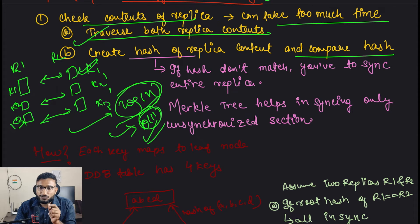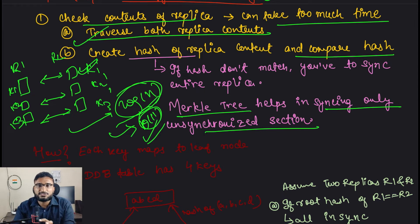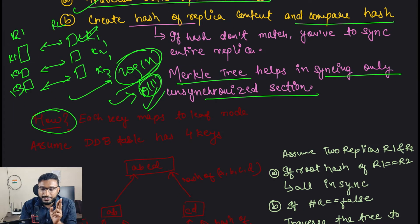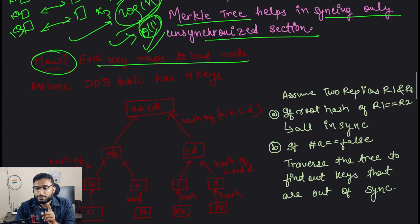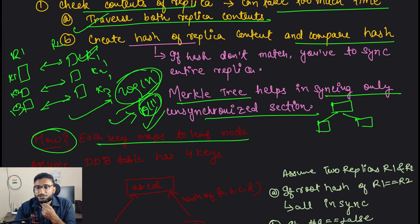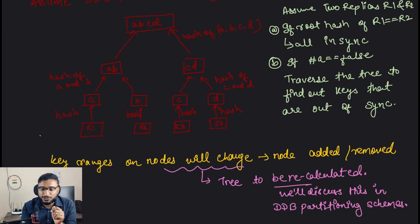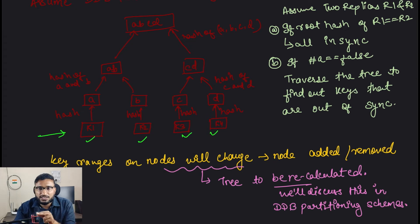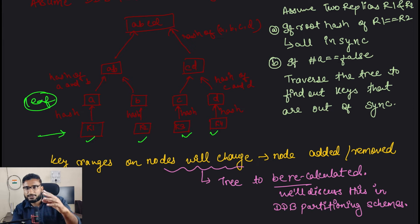This is where Merkle trees help. Merkle trees help in syncing only the unsynchronized sections - we determine which sections are unsynchronized and focus on those specifically. Each key maps to a particular leaf node in the Merkle tree. In Dynamo's case it is a binary tree, and in each node of this tree we store hashes of the keys. We start from the leaf nodes. Let's say we have four keys K1, K2, K3, and K4. We calculate hashes of these four keys and get hashes A, B, C, and D as the leaf nodes. Then we traverse bottom-up.